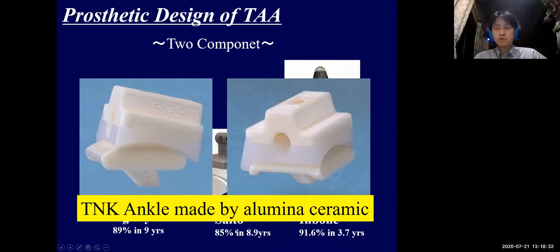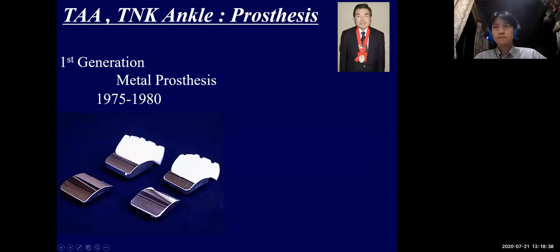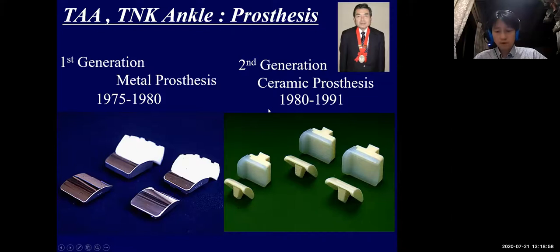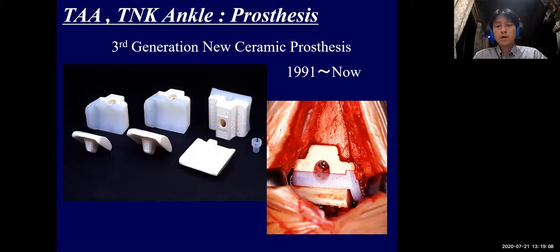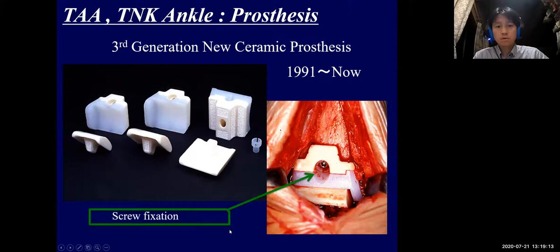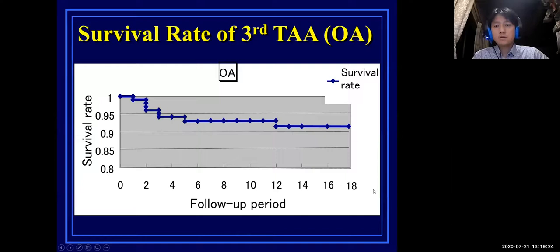Our TNK ankle is a two-component model made of alumina ceramic, originally developed by Professor Emeritus Yoshinori Takakura. The first generation was made with stainless steel using cement. Alumina ceramic was introduced in the second generation. In 1991 it was refined to the third generation model with screw holes and cement bead mounting for better bone bonding. The 18-year survival rate is projected at 92%.